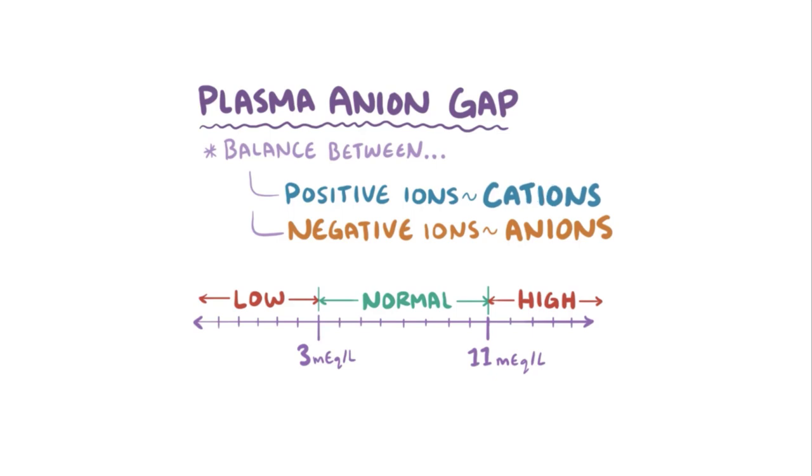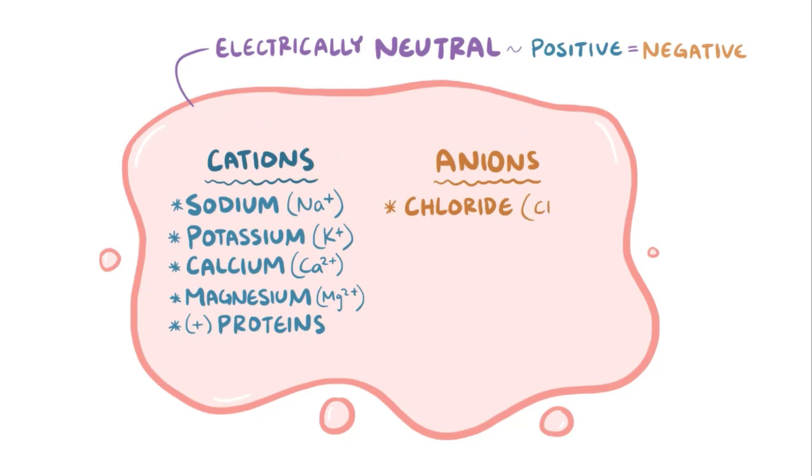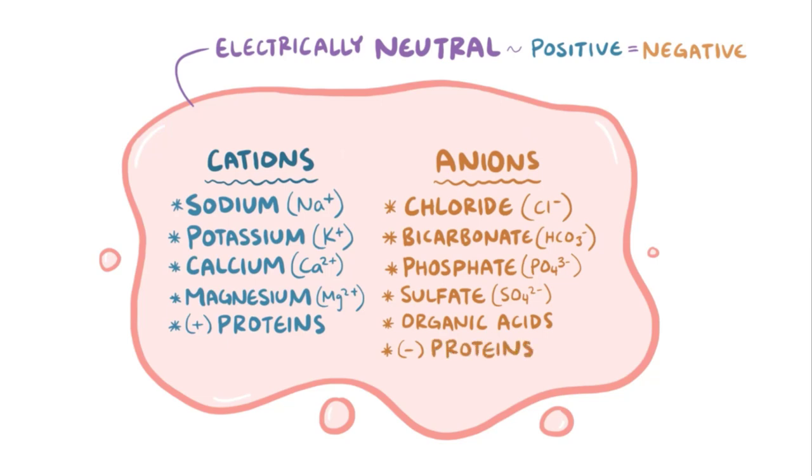At every moment there are trillions of cations and anions floating around inside our blood vessels. For them to happily and stably coexist, the plasma has to be kept electrically neutral. That means that the sum of all positive charge from cations has to equal the sum of all negative charge from anions. The vast majority of cations are sodium ions (Na+), followed by potassium (K+), then calcium (Ca2+), then magnesium (Mg2+), and finally various positively charged proteins. The majority of anions are chloride ions (Cl-), followed by bicarbonate (HCO3-), then phosphate (PO4 3-), then sulfate (SO4 2-), and finally some organic acids and negatively charged plasma proteins, like albumin.